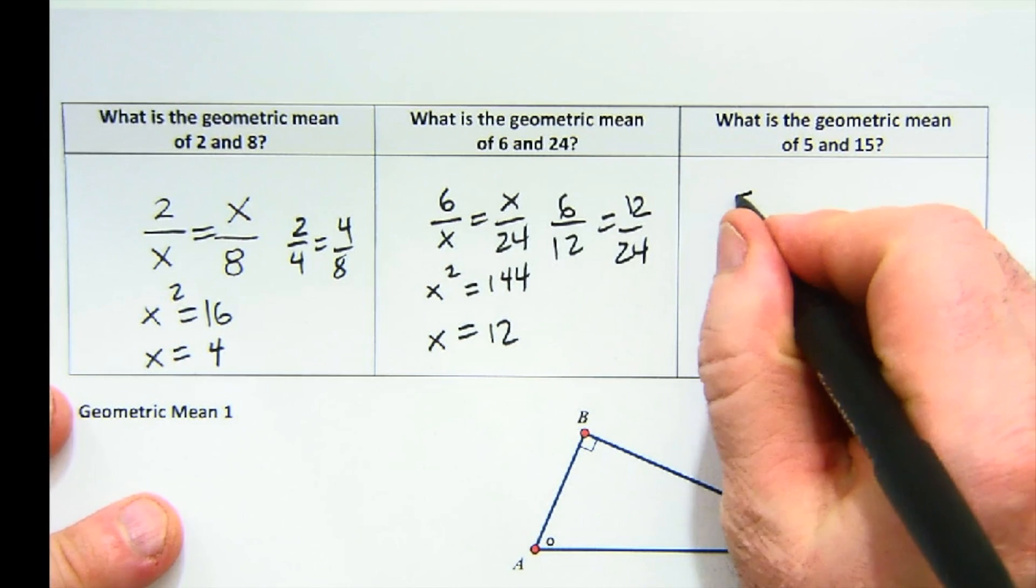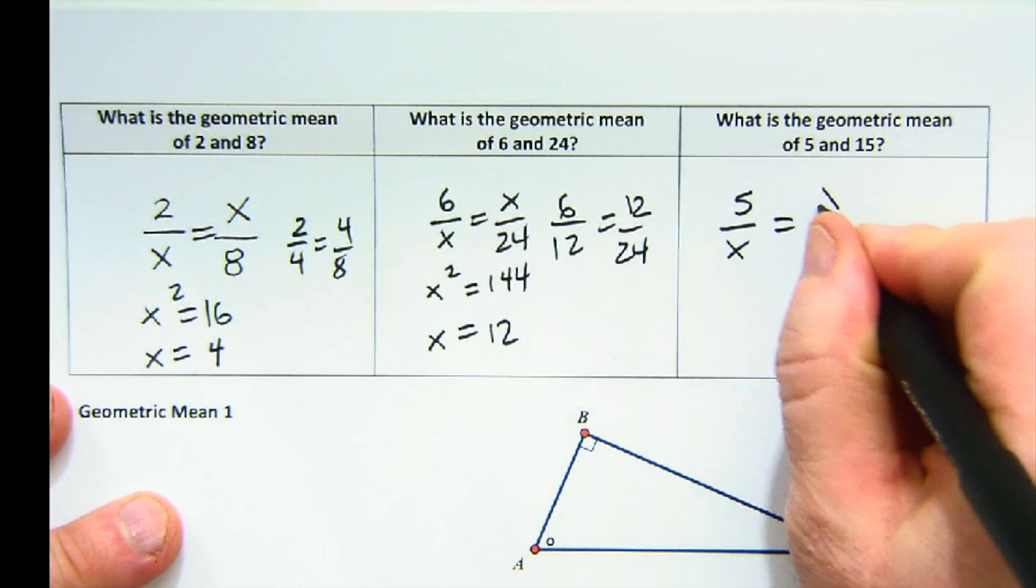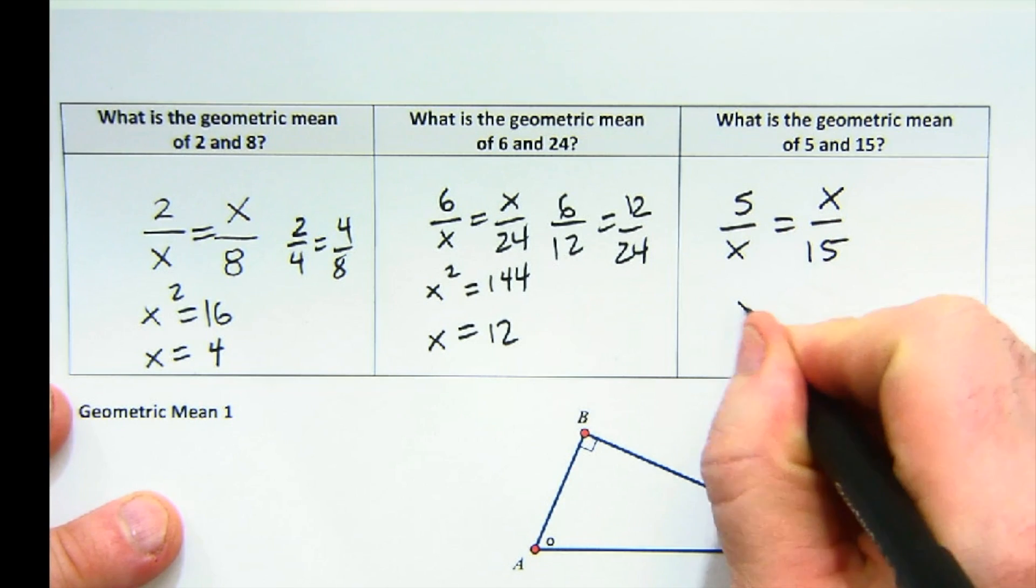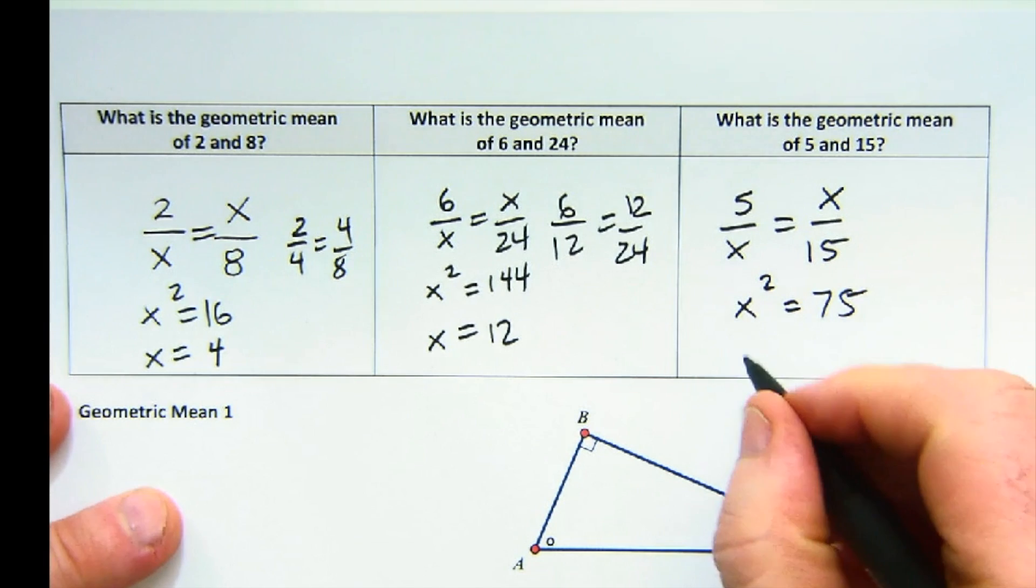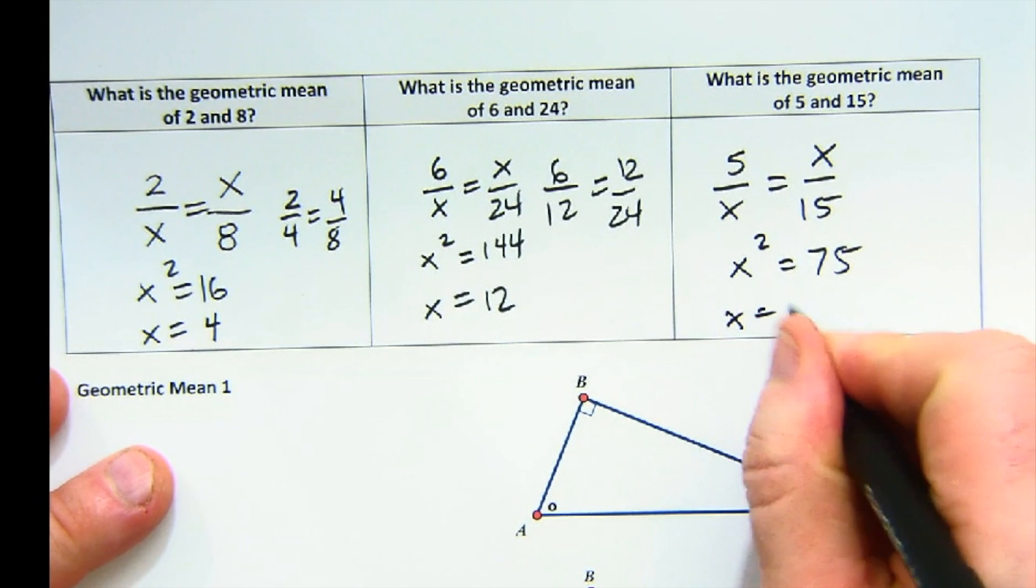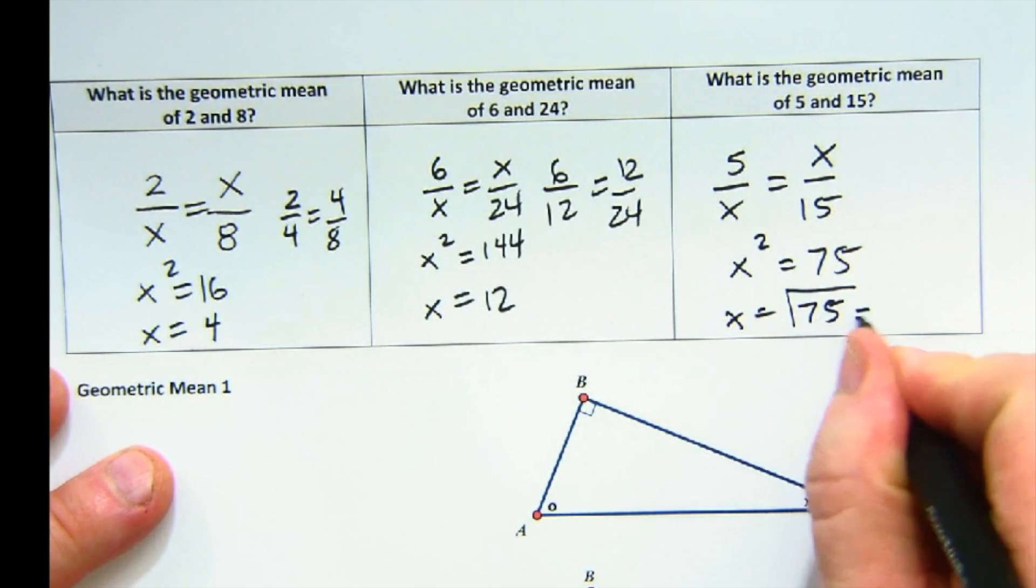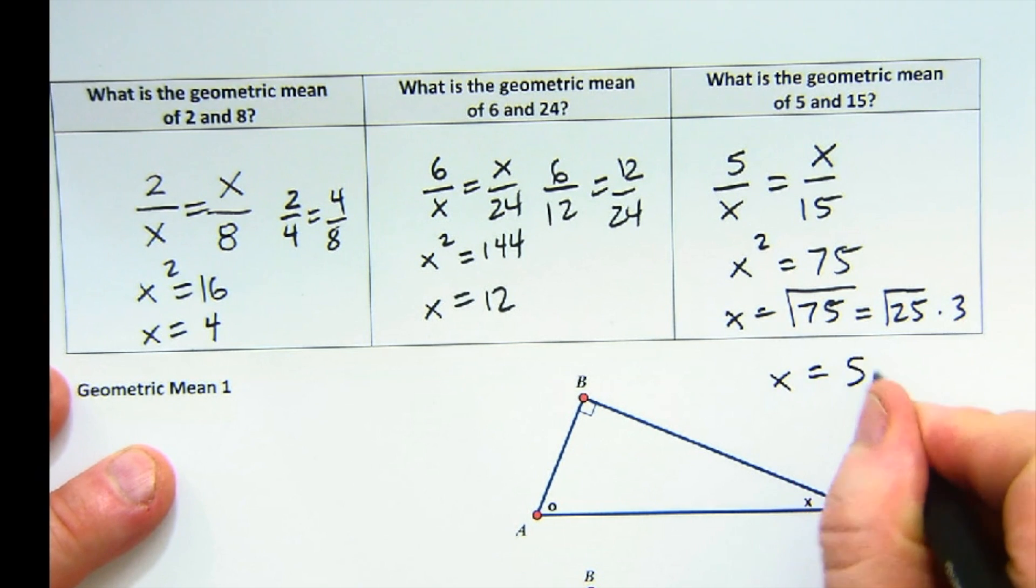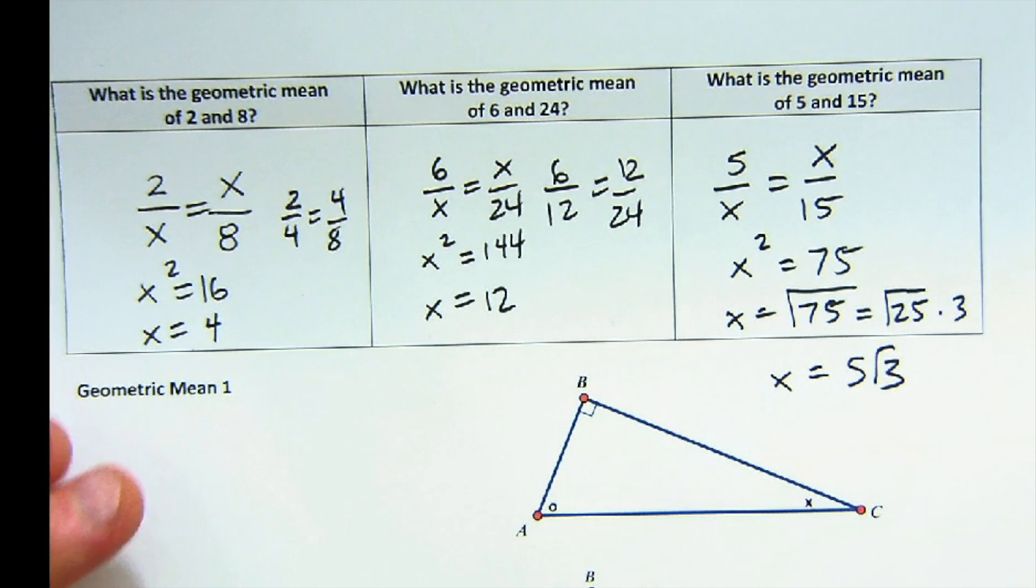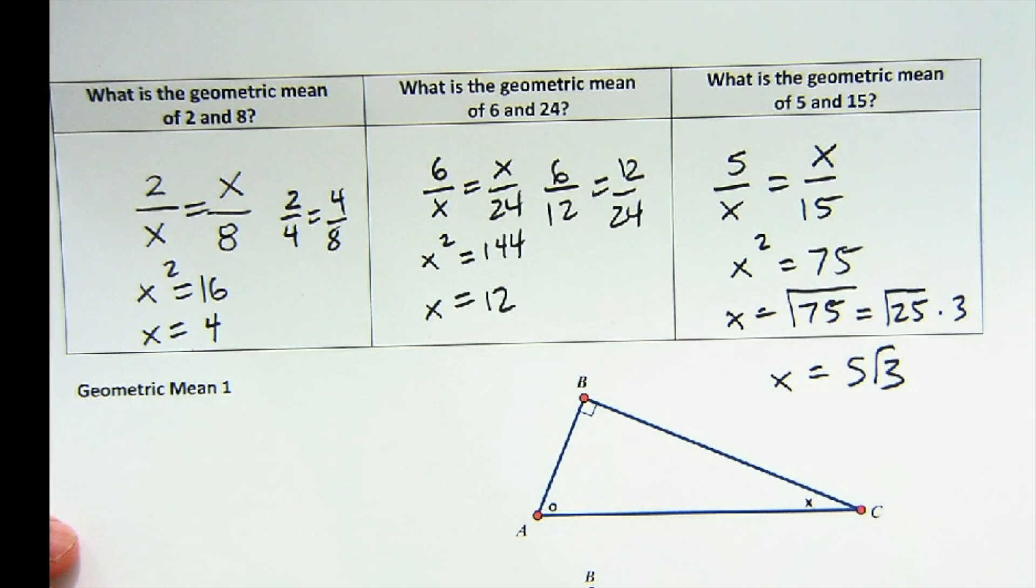These numbers are not always nice numbers like this. By far, it isn't usually that way. So this is 5, 15. And we get x equals the square root of 75, which is 25 times 3. So x equals 5 root 3, which is some really ugly decimal. But the point is that the geometric mean will always be between the 5 and the 15 in such a way that this proportion works.